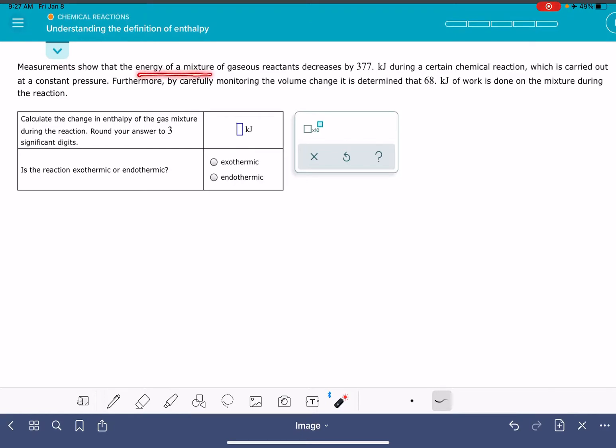The problem is telling us that the energy of a system is decreasing by 377 kilojoules. Let's make a note of that. The change in energy for the system, because the energy is decreasing, it's negative 377 kilojoules. And we'll make a note down here.